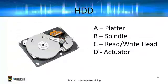Here we have a photograph of a typical HDD, or at least what you would see if you opened one up, and you can clearly see the platters. There's more than one here, and you've got the spindle, which spins it like an old 45 record. There's the arm, and right at the end there you have the read-write head, and you've got the actuator over here, which is responsible for moving the arm itself.